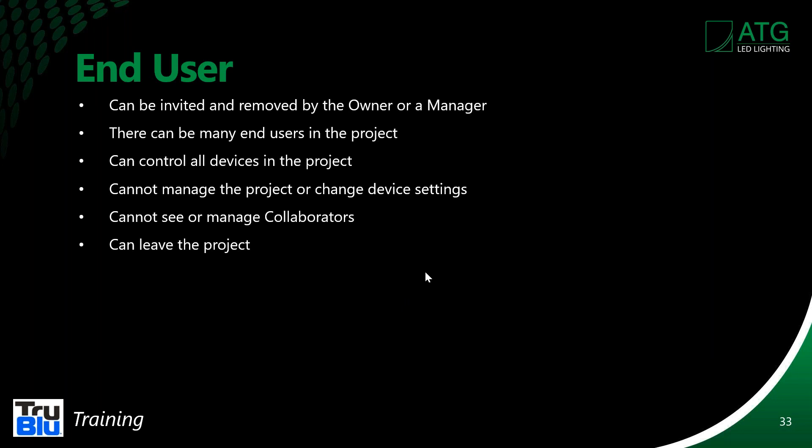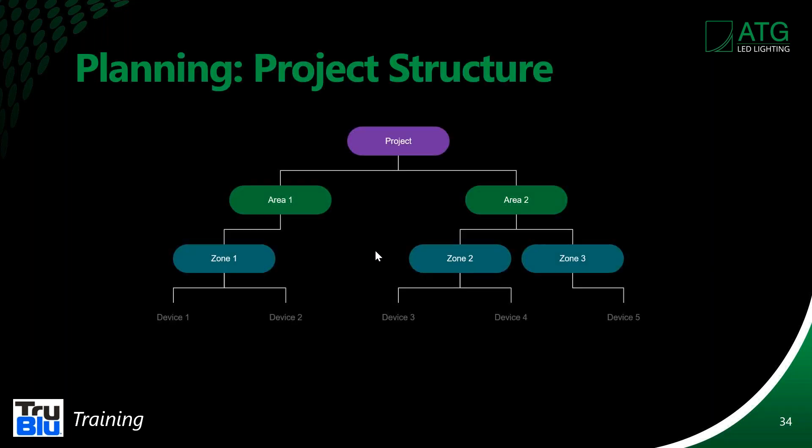The end user is the person who decided to spend the money and save energy. There can be many end users — everybody in the building might be an end user. They can control all the devices, but they cannot manage the project or change things. We don't just hand them the keys and say enjoy — there have to be some limitations, so essentially they're able to use the system but can't make major changes.